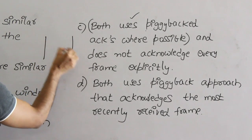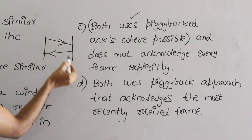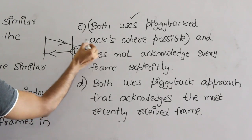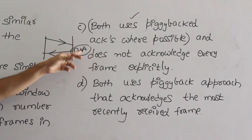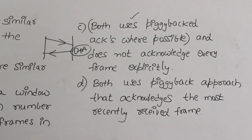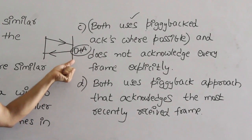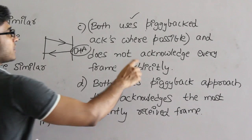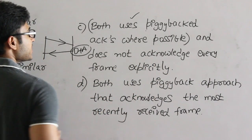If you are going to send a packet and from the other side a packet is also coming back, putting an acknowledgement on that packet doesn't hurt because it is not wasting one more header. If you send a pure acknowledgment, it is nothing but a pure header. Putting the acknowledgment on the data itself is always better. But then, they are saying it does not acknowledge every frame explicitly.